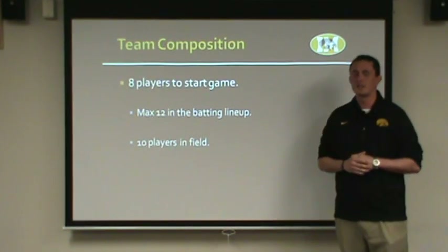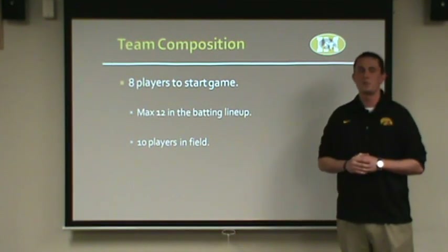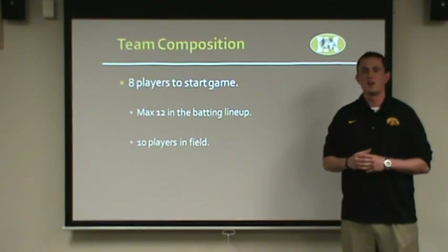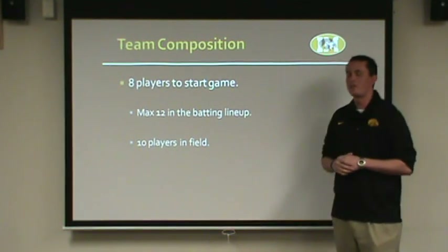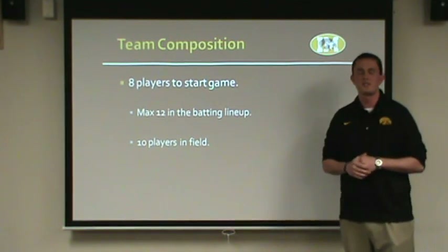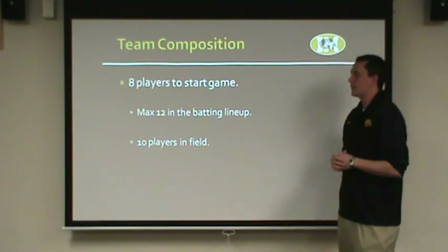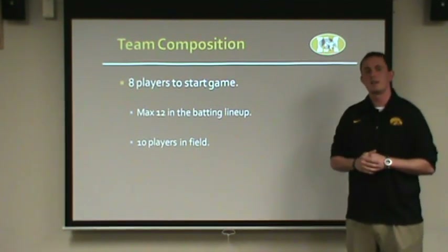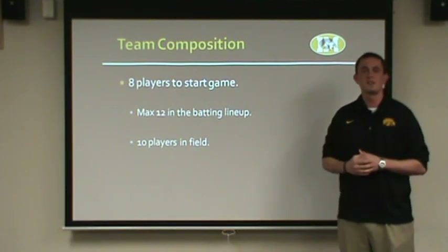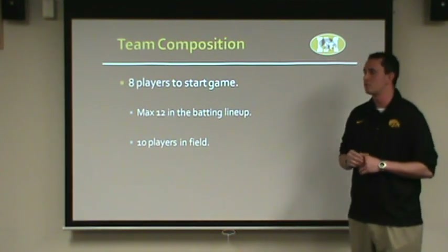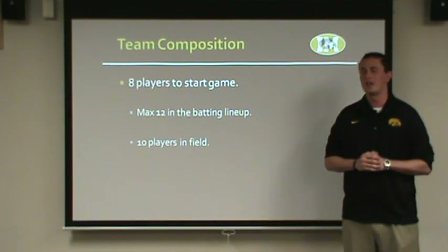For team composition, you need eight players to start a game and must have a minimum of eight players on your roster to complete registration. Make sure you have eight players at the facility, checked in and ready to go. You can bat a maximum of twelve players in your batting lineup, so you can have as many players on your team as you want, but only twelve can bat, and you can only play ten in the field at one time.